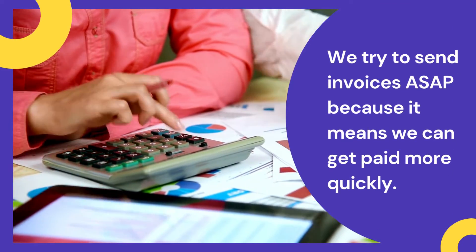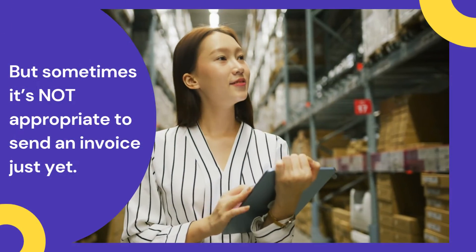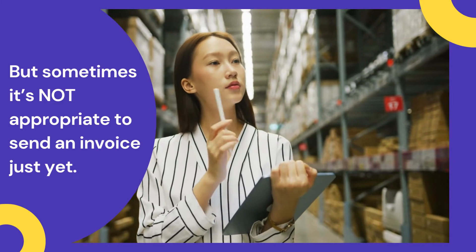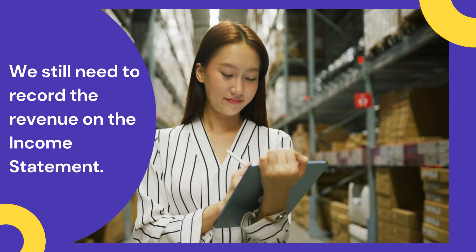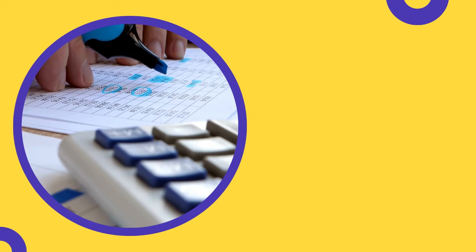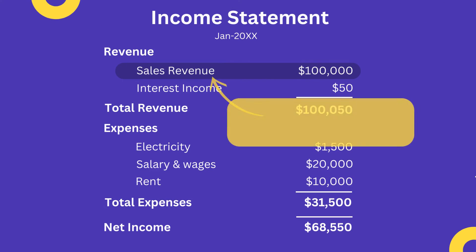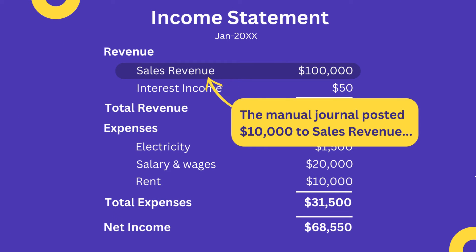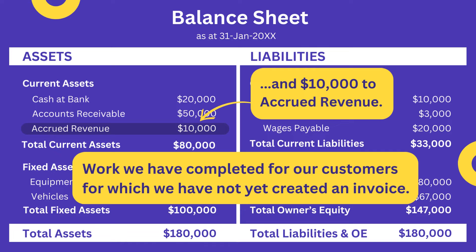We always try to send invoices to customers as soon as possible because it means we'll get paid more quickly, but sometimes there are situations in which it is not appropriate to send an invoice yet. When this happens, we still need to include that revenue on our income statement because we have actually earned it, and the way to do that is by posting a manual journal in our accounting system. So for this month, our manual journal posted $10,000 to the revenue line on the income statement and $10,000 to Accrued Revenue on the balance sheet — meaning that the $10,000 represents work we have completed for our customers for which we have not yet created an invoice.